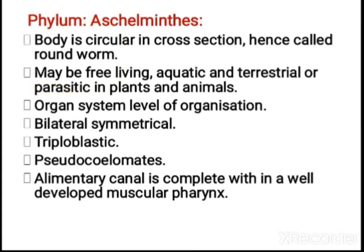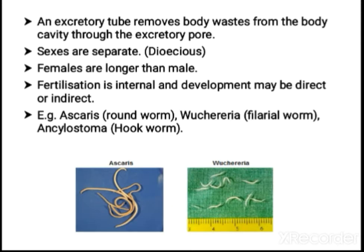Aschelminthes may be free-living aquatic, terrestrial, or parasitic in plants and animals. These organisms show organ system level of organization, and the symmetry is bilaterally symmetrical, triploblastic, and pseudocoelomate — false coelom. The alimentary canal is complete and they also have a muscular pharynx. The excretory tube removes waste from the body, which is sent out by means of excretory pores. Sexes are separate — dioecious organisms — and females are longer than males. Fertilization is internal and development can be direct or indirect.